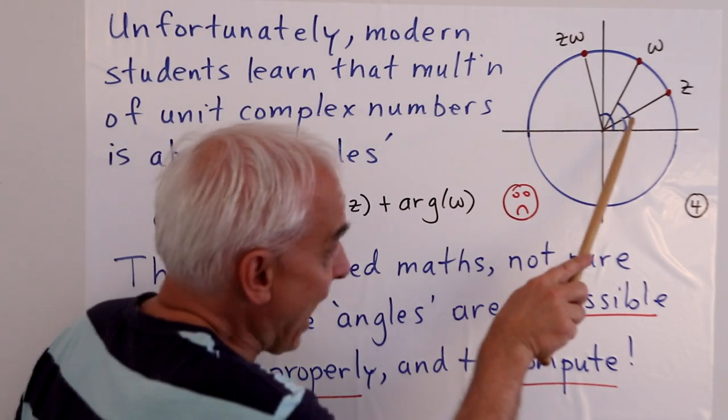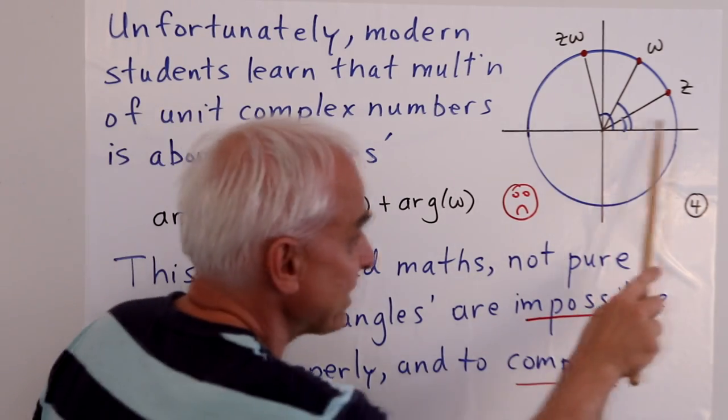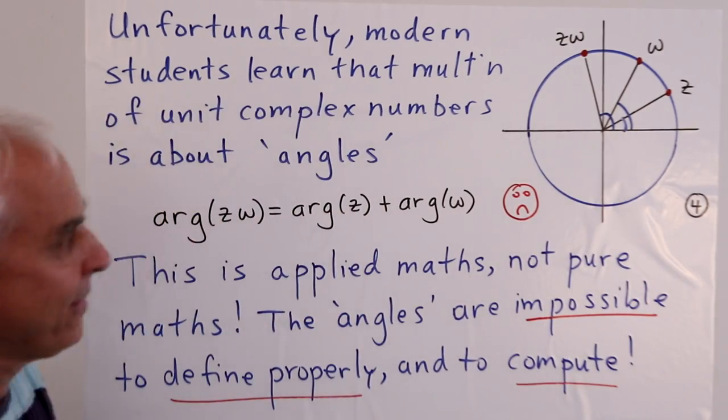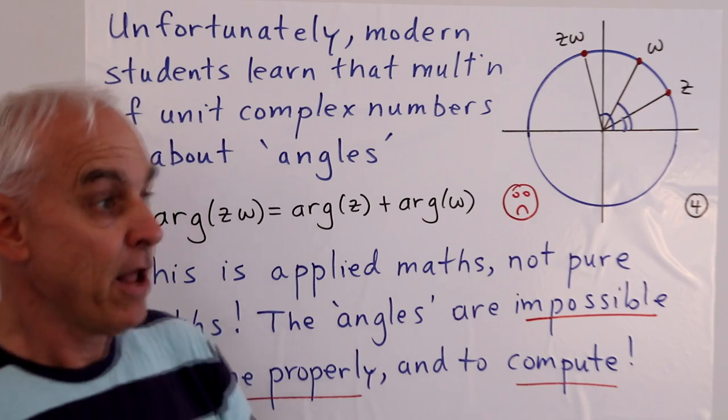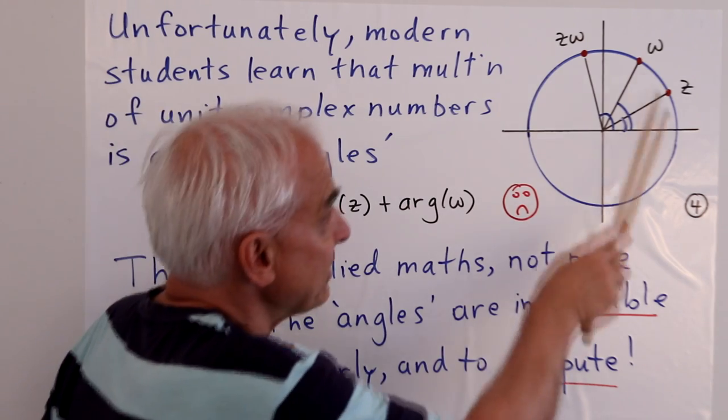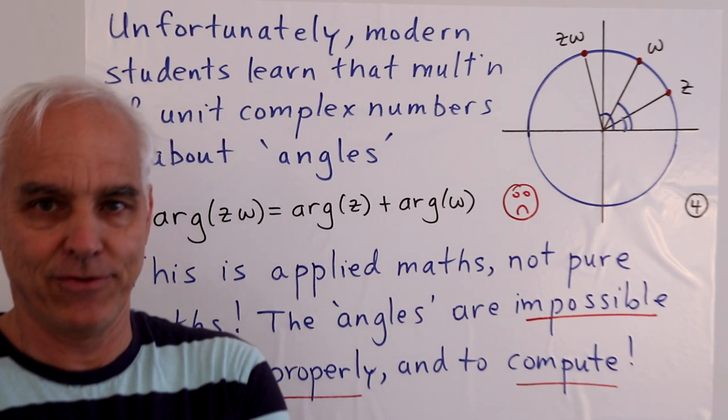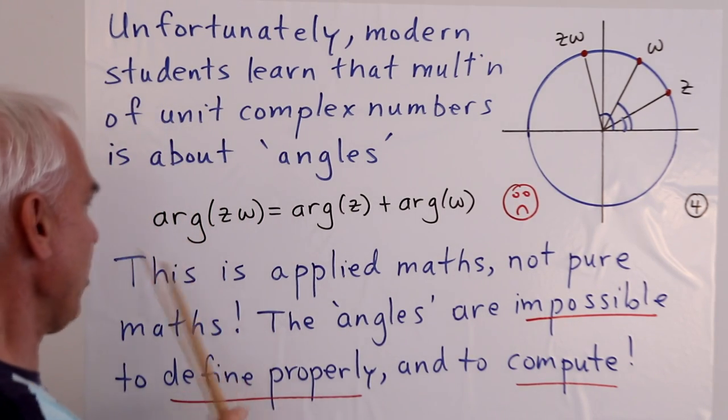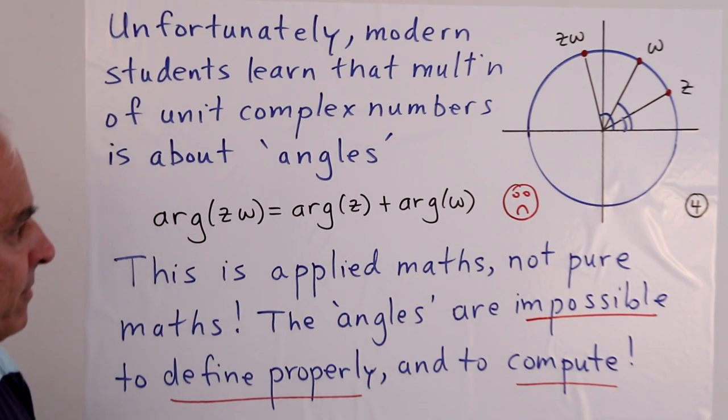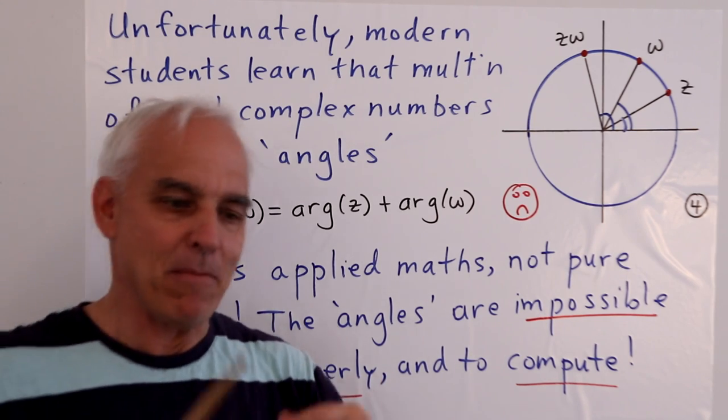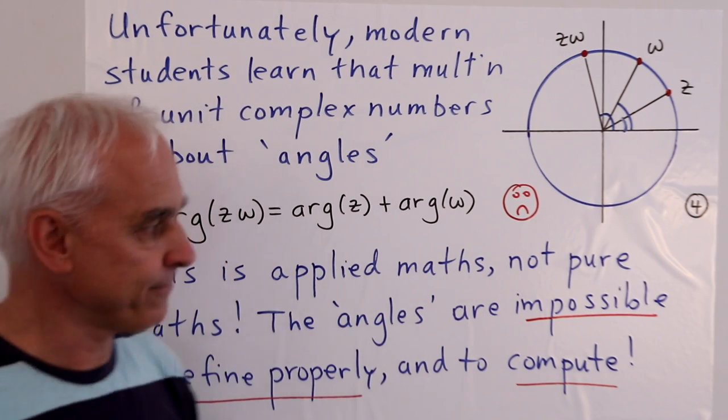They learn that if you take the angle formed by the x-axis and z and the angle formed by the x-axis and w, those are called the argument of z and the argument of w, those angles, that then the product z times w has an argument or angle which is the sum of those two angles. So arg(zw) equals arg(z) plus arg(w). And that's how you describe the multiplication of complex numbers geometrically using angles.